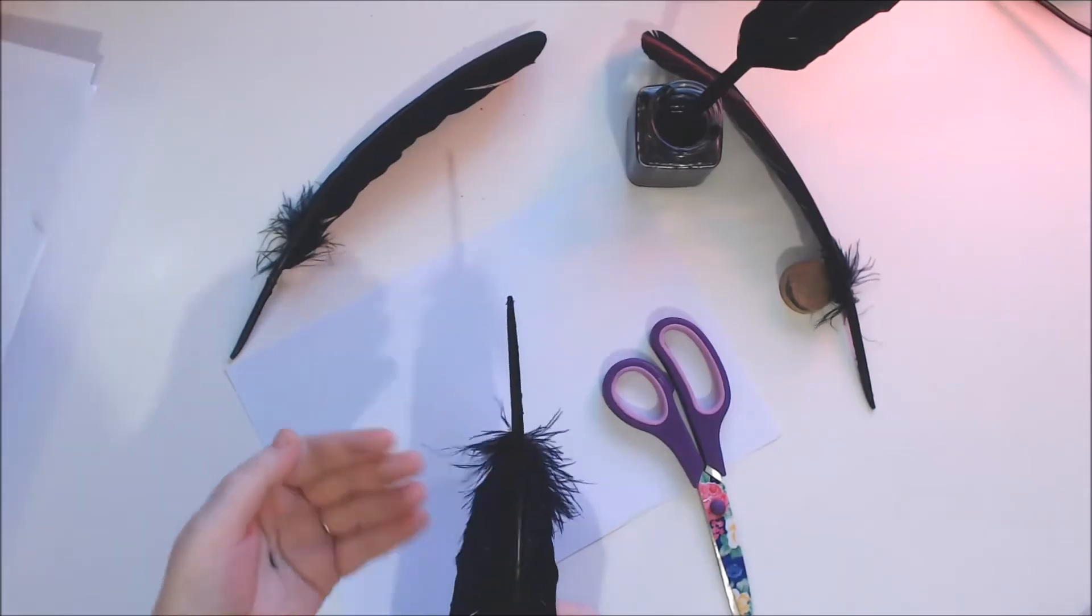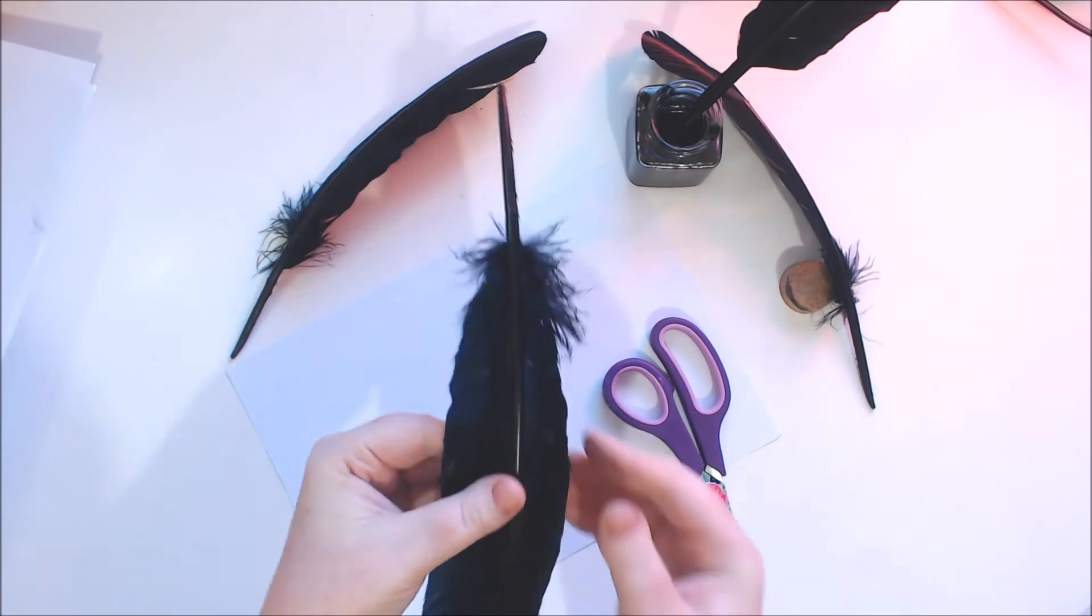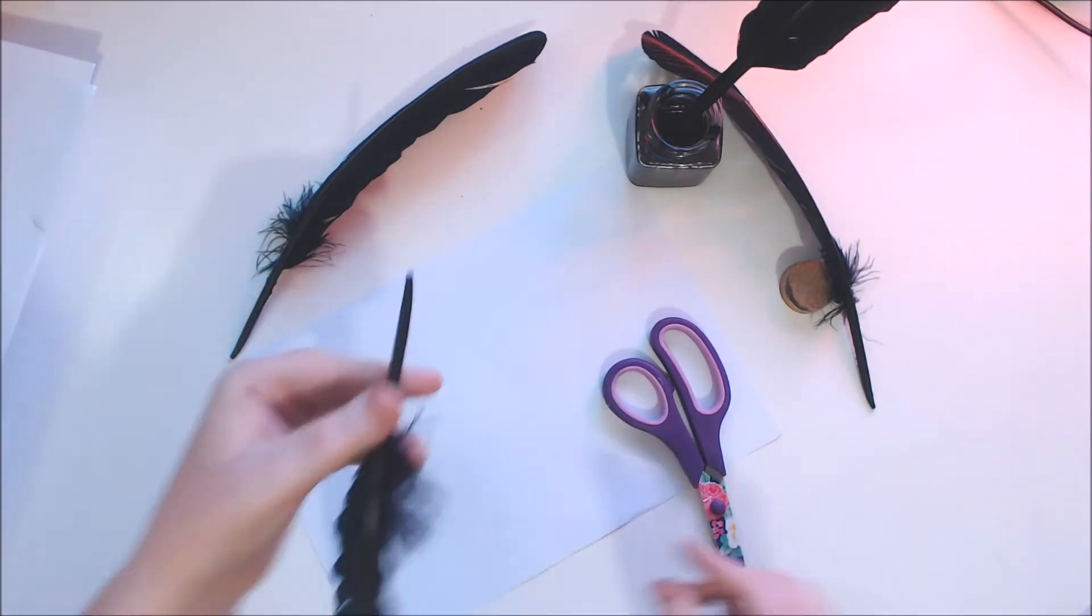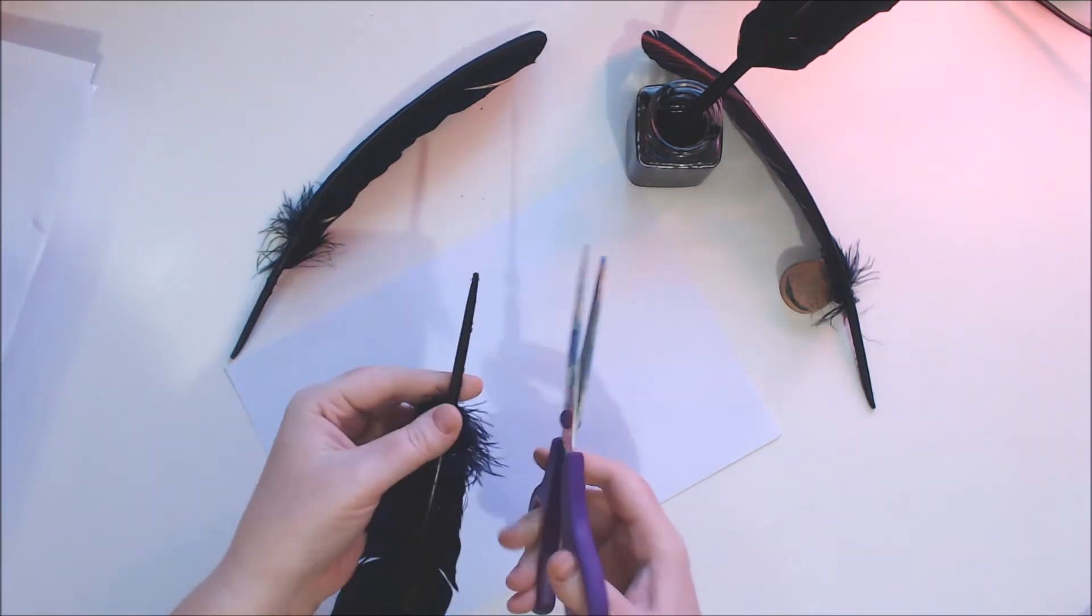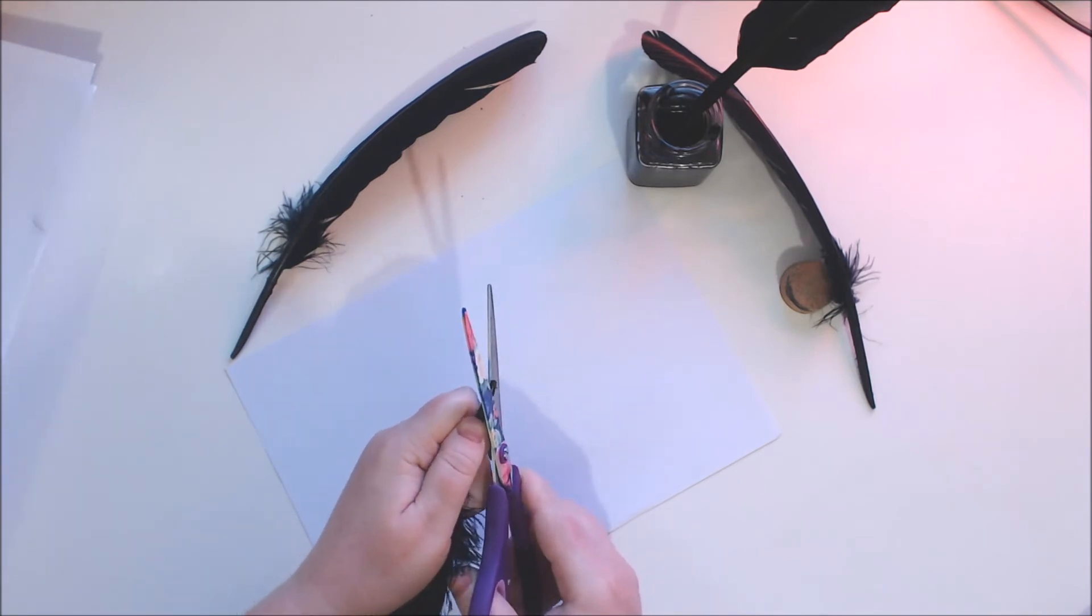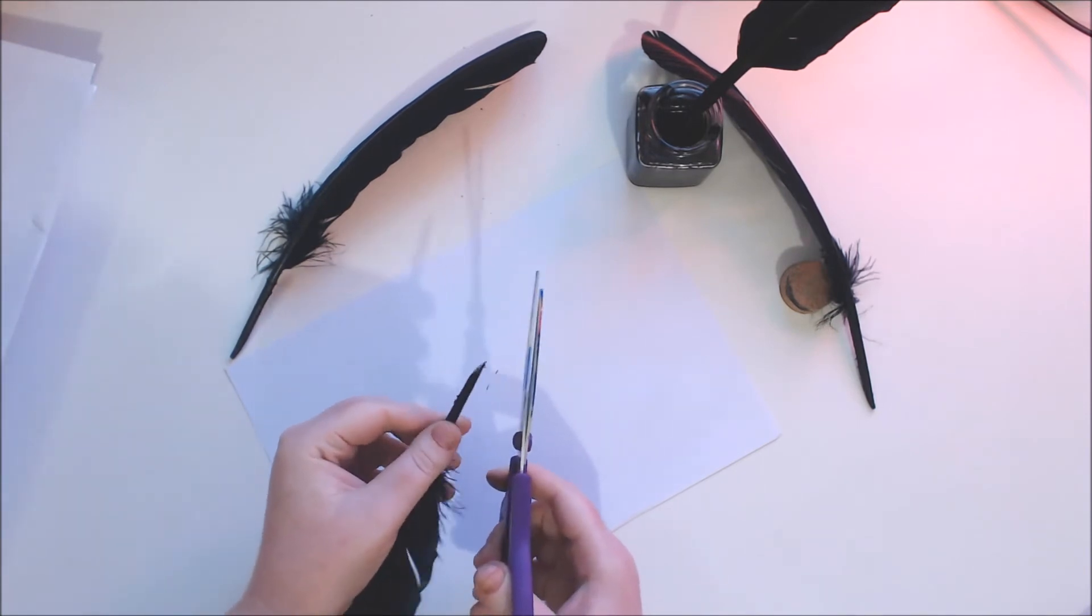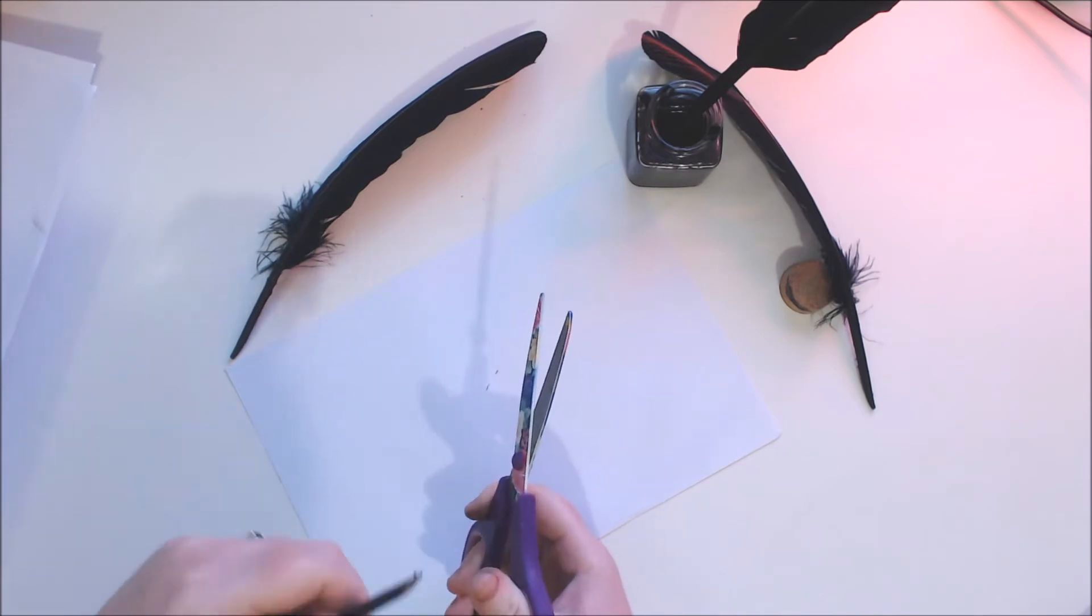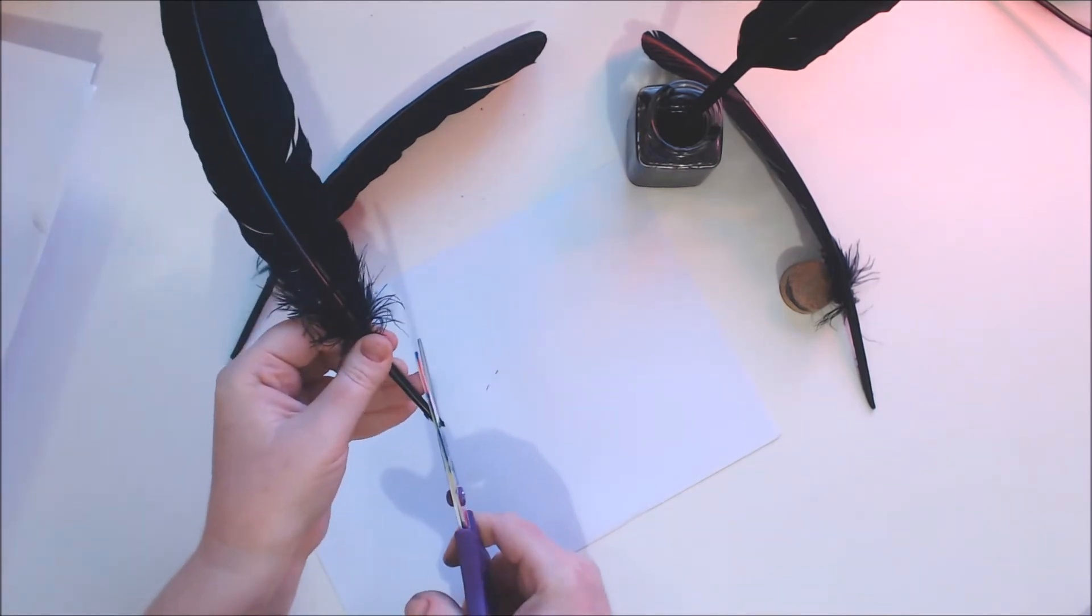It works really well. It absorbs up the ink. It will write for a little while before you have to dip it back in. Let's put that one to the side and I will show you how to make your very own. Get yourself a feather. You don't need to trim anything but you can trim off those extra bits if you want. Grab yourself a pair of scissors.